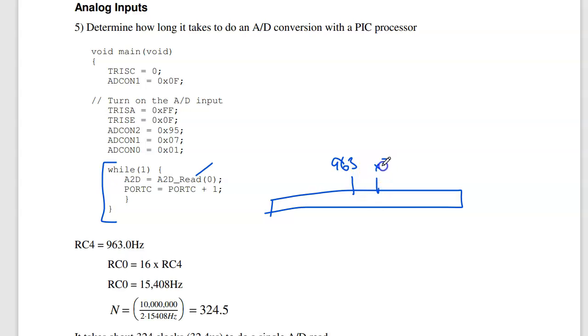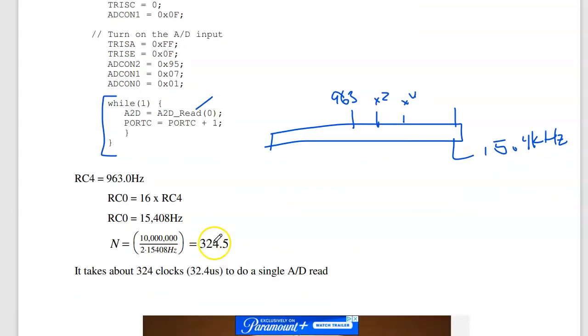So if this is 963 hertz, this will be times 2, times 4. When you go over to RC0, the one I care about, that will be times 16. So RC0 should be about 15.4 kilohertz.